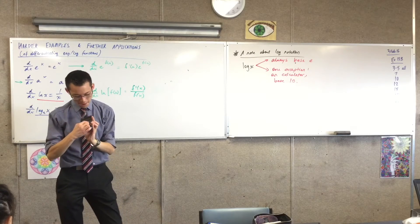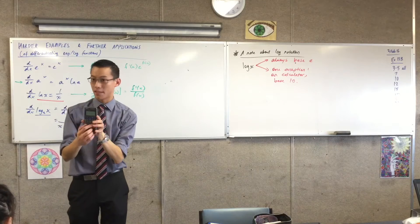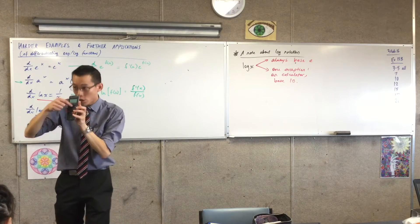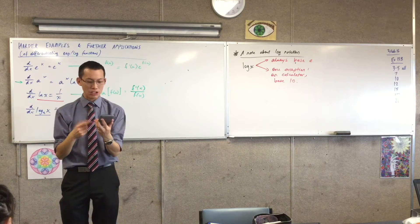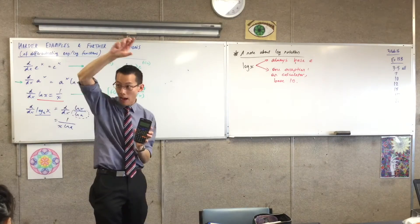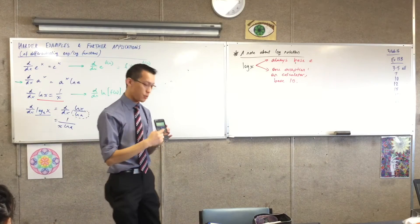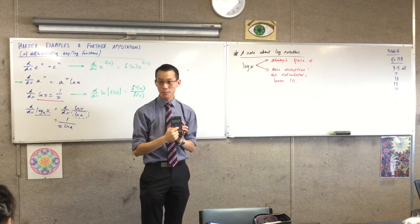You can also see, by the way, to indicate on your calculator that log by itself is base 10, just look above. Look above the button. Do you see in yellow, it says 10 to the power of, it's an exponential base 10, which is how you know that log button also has base 10.